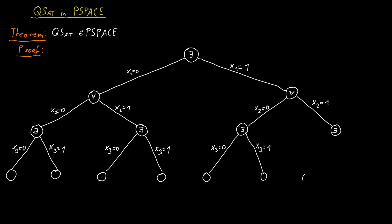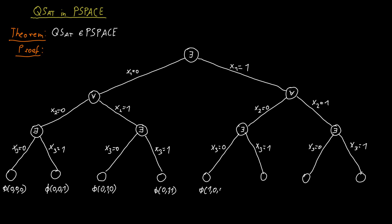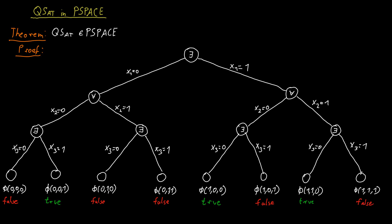This continues until we've picked a value for all the variables, at which point we reach a leaf of the tree. In that leaf, we have a value for each variable, so we can evaluate the Boolean CNF formula and determine whether it's true or false. The leaves of the tree therefore correspond to true or false values.